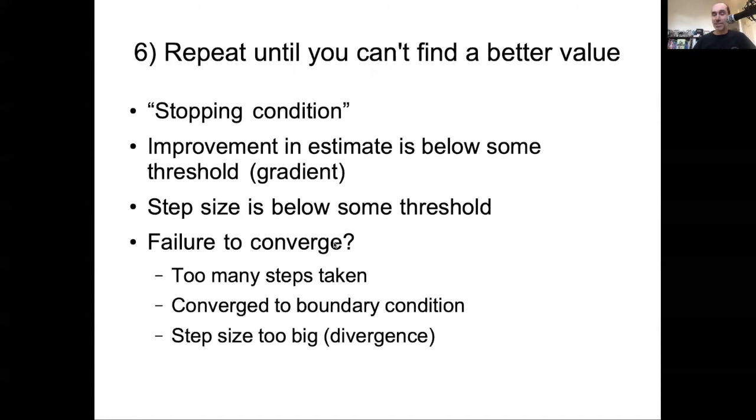Or you might stop because your algorithm has decided that it cannot figure out where the minima is. And this is an important thing to check within any of these algorithms. Did they give you an error code letting you know that they did not converge? So one reason that it might not converge is that it's taking too many steps. Often you set up a limit on the number of steps the algorithm can take so that it doesn't spend thousands of years trying to find a minima. It might stop because it converged to a boundary condition. So in some of these algorithms, you can put a bounding box around where you want it to search, and if it keeps walking into the wall, it'll stop.